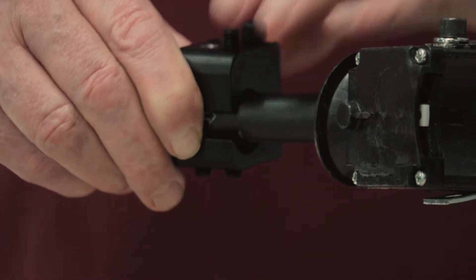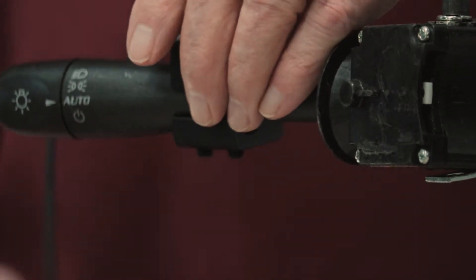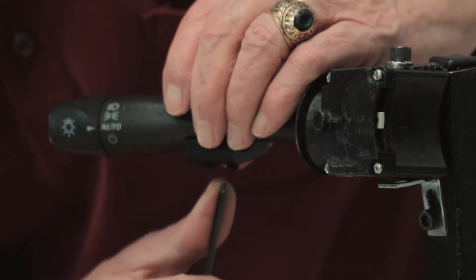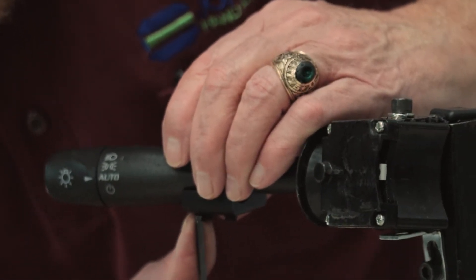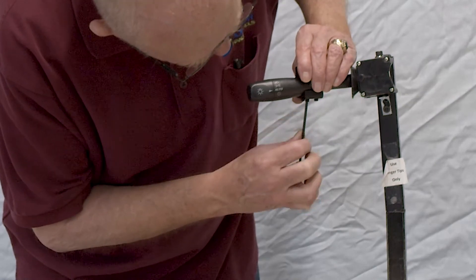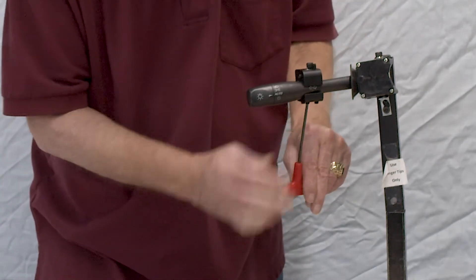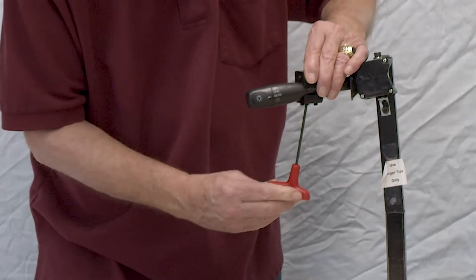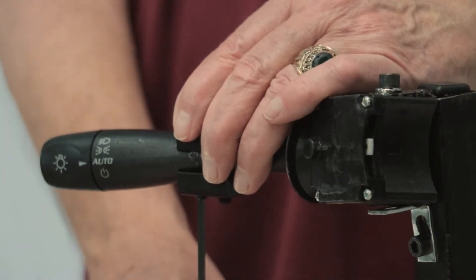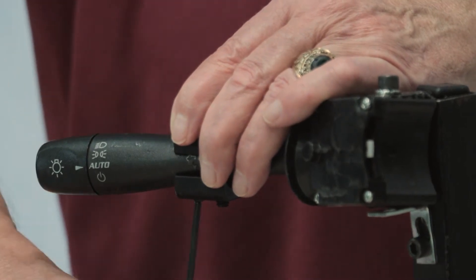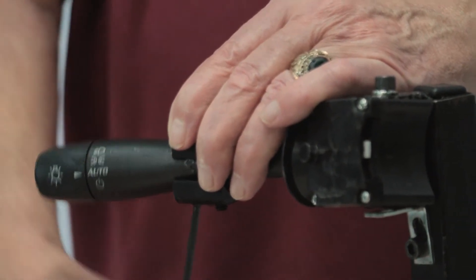Then you tighten up the inside set screw at the bottom. You screw this in until you feel the contact, and then about a quarter turn is all you really need to hold it in place.